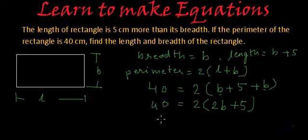So it will become 40. This will be equal to 2 multiplied by 2B will be 4B, and 5 multiplied by 2 will be 10. So 40 is equal to 4B plus 10.